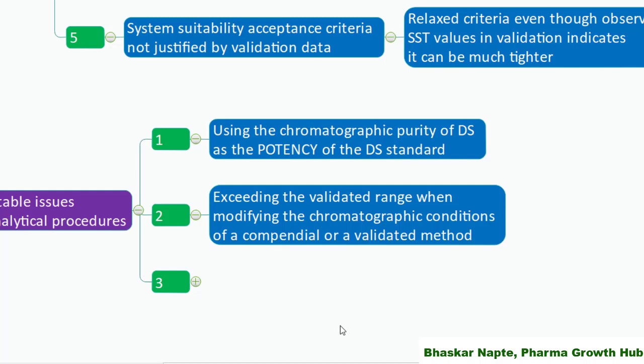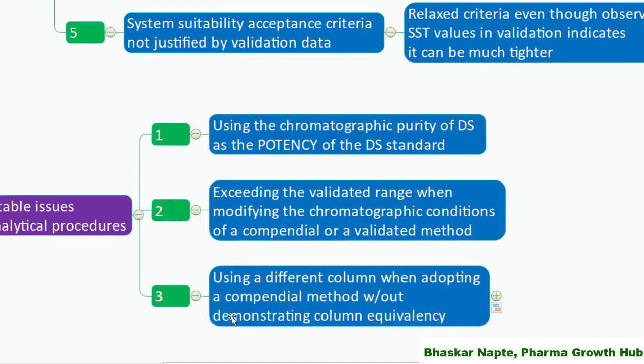Exceeding the validated range when modifying the chromatographic conditions of a compendial or validated method. You need to understand the boundary of your method's robust range — for example, the method is robust between pH ± 0.2 and organic solvent variations of ± 5%. You are allowed to make changes within these studied ranges, but if you start varying parameters beyond the proven robust range, this is not acceptable. If you need to exceed these ranges, do consider conducting a robustness study.